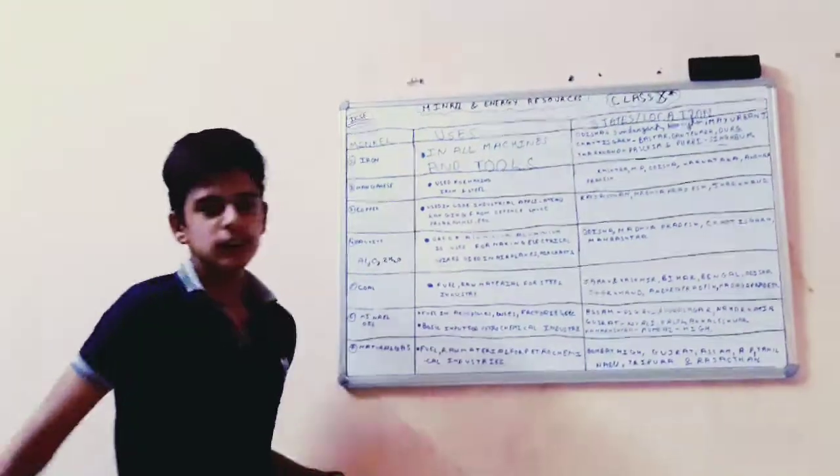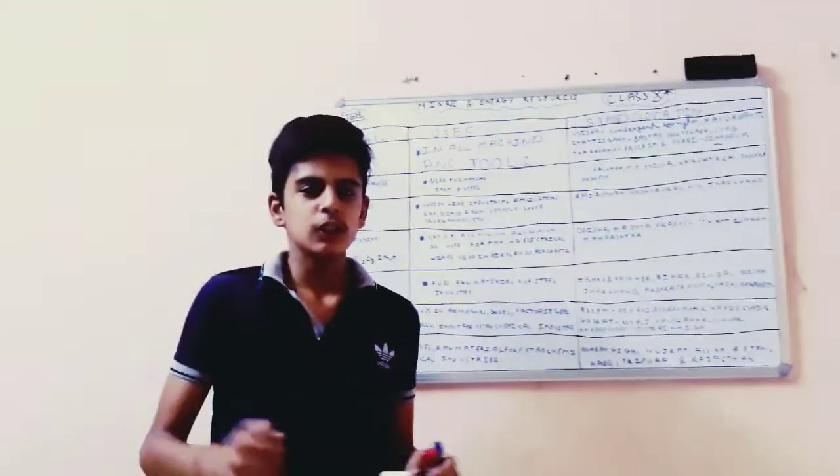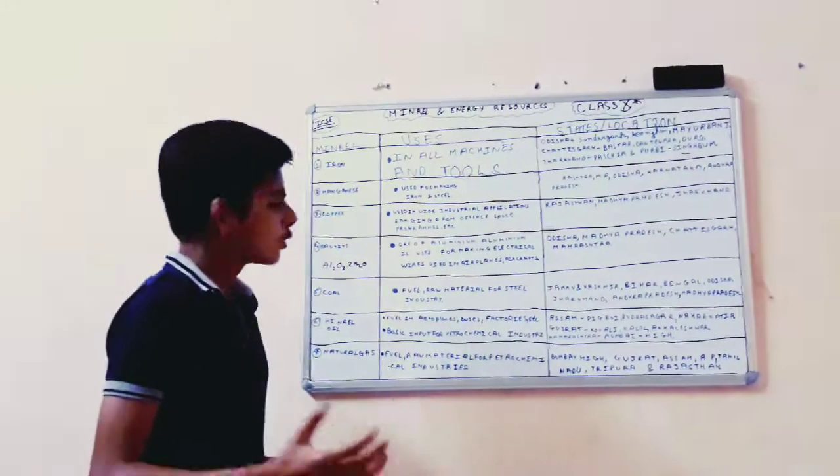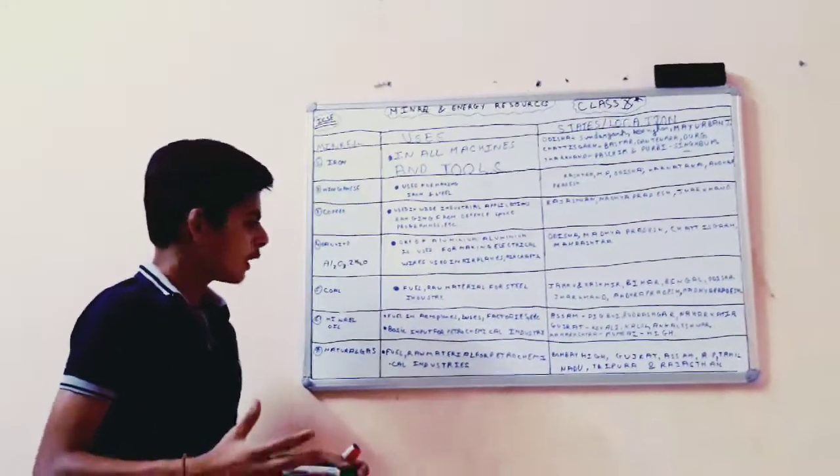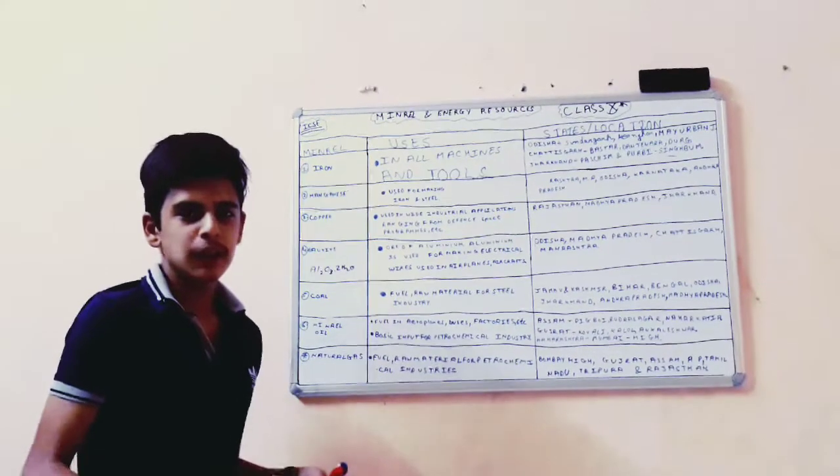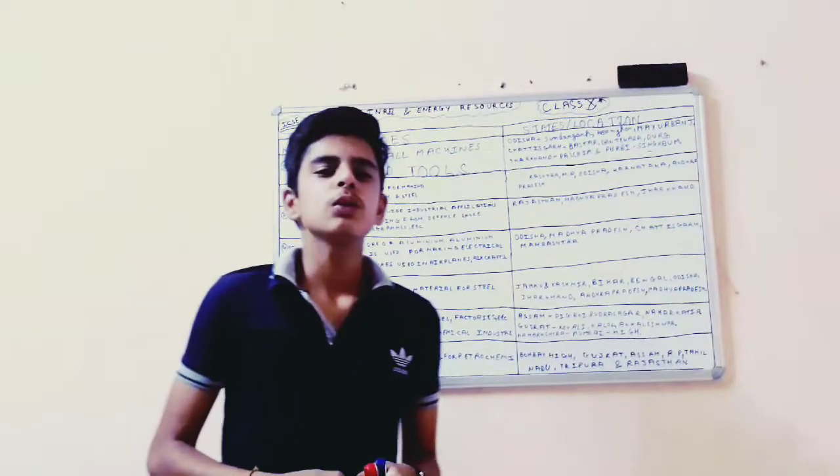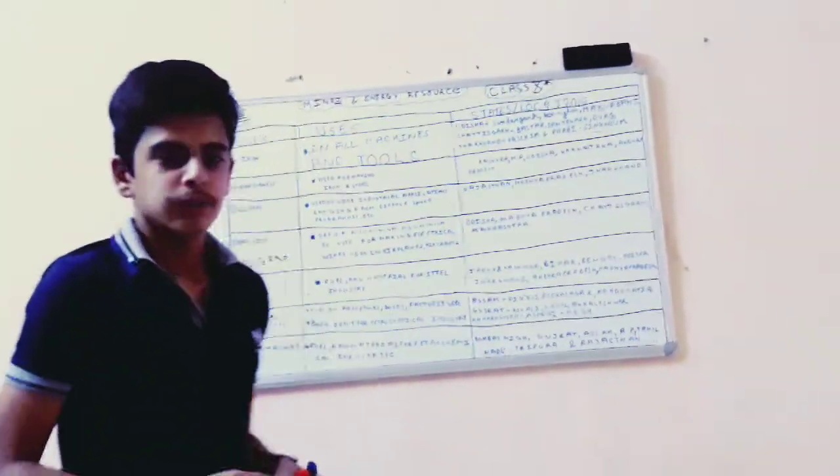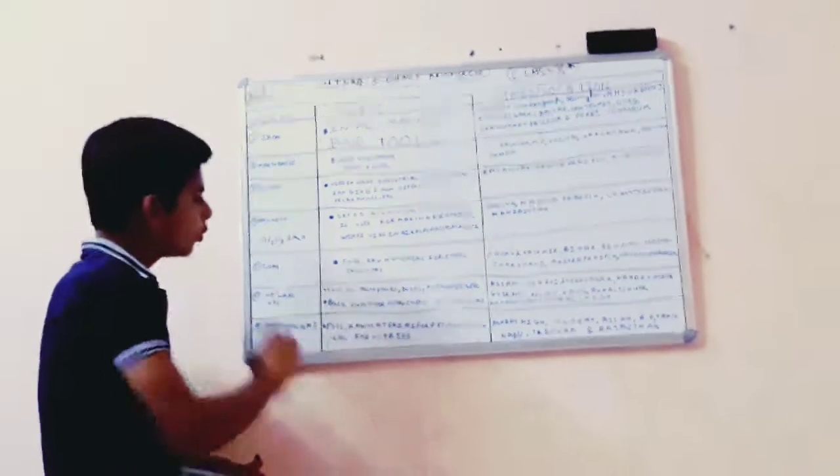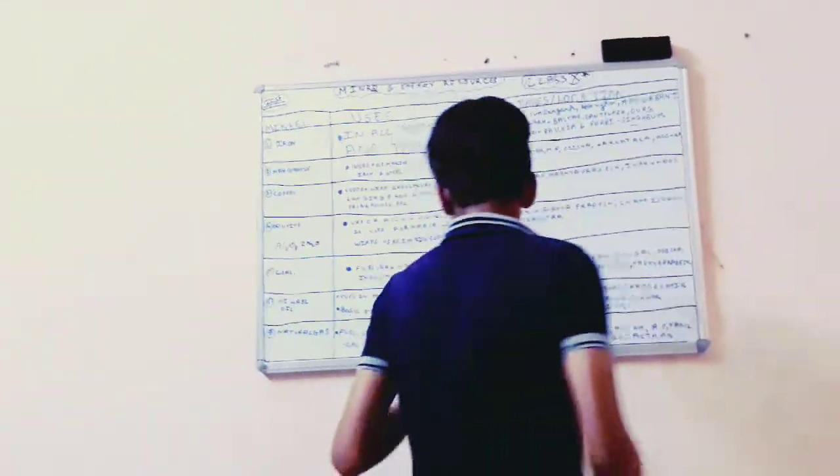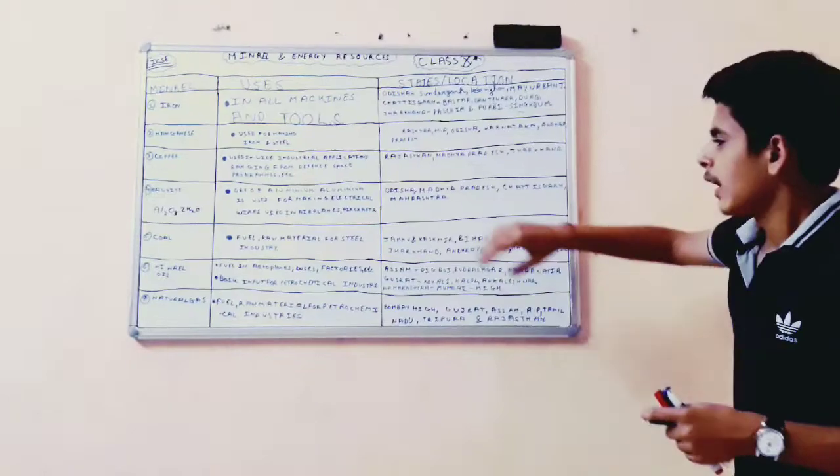Now coal. Coal is a fuel, raw material for steel industries. Steel industries mainly use it. This mineral is used in the industries.